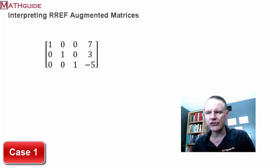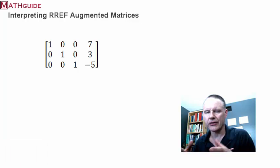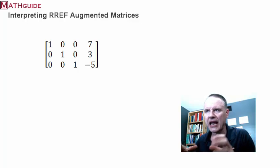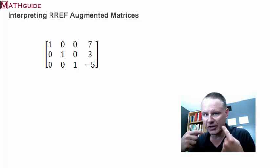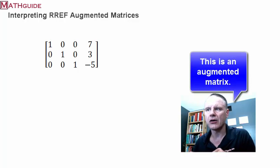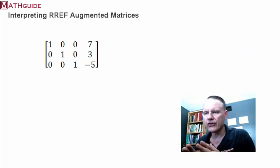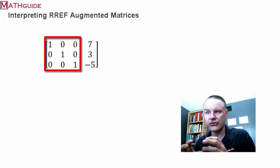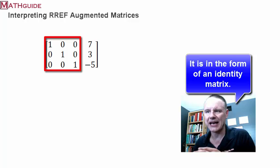Let's talk about case one where there's one solution. You're dealing with a system of equations — in this particular instance, three equations and three unknowns. After taking those three equations and three unknowns, either using a calculator or using the Gaussian method, you now have this augmented matrix. We're now trying to figure out what this means. If you notice the first three columns, we have ones along the diagonal and zeros everywhere else.